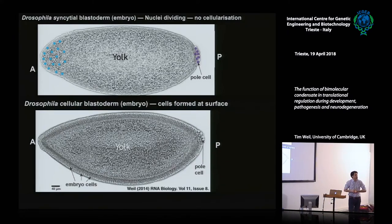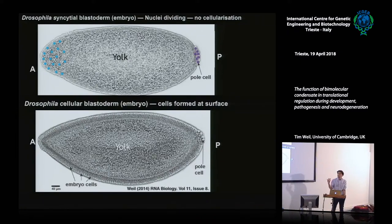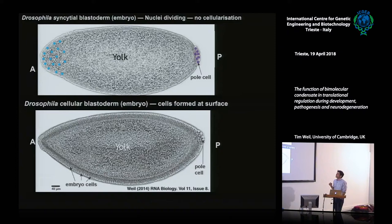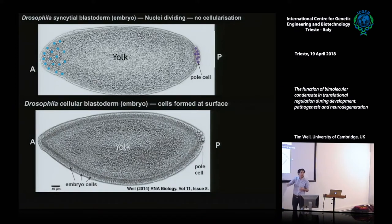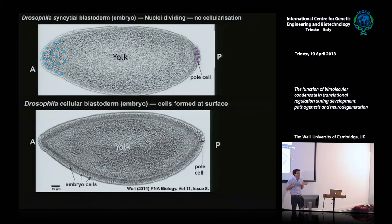Entering the early embryo, we get a syncytial blastoderm — many nuclei in a single cytoplasm, similar to muscle cells. You have yolk in the middle, anterior determinants at the anterior, posterior determinants at the posterior. The embryo goes through 14 nuclear divisions; around division 10, nuclei migrate to the periphery and then cellularize. The morphogenetic gradients that form have been studied extensively in Drosophila — different concentrations of protein or RNA lead to different developmental outcomes when membranes form.